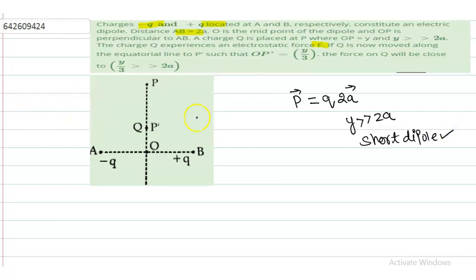Now we have given the force at this point. A charge capital Q is placed at point P, so force on Q at point P will be what? Q, that is capital Q, into electric field. So Q is capital Q and electric field due to dipole.